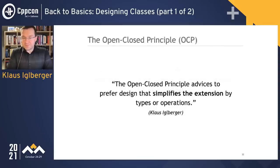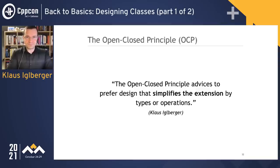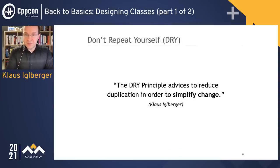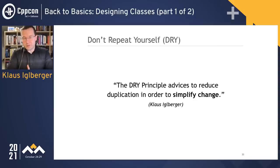The Open-Closed Principle advises to prefer designs that simplify extension by types or operations — at any point it should be easy to extend software, in the optimal case by just adding code without modifying anything. That explains the name: open for extension, but closed for modification. The DRY (Don't Repeat Yourself) principle advises to reduce duplication in order to simplify change, because if you duplicate code you may have to change things in many places, carrying the enormous risk of forgetting one place and introducing inconsistency or bugs. Duplication is something we should reduce as much as possible; complex things should be implemented exactly once.